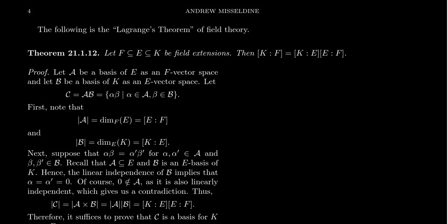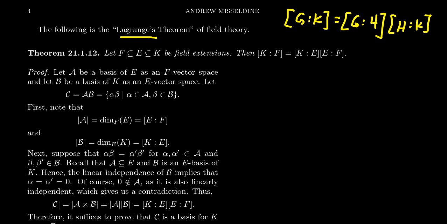In this video we're going to prove what one might call the analog of Lagrange's theorem for field theory. Lagrange's theorem tells us that every subgroup of a finite group divides the order of the group. From that you can infer a statement about indices: if the index of a subgroup measures the number of cosets, then you can factor indices. So if you have some subgroup K, the number of cosets of K inside G equals the number of cosets of H inside G times the number of cosets of K inside H, where K is a subgroup of H which is a subgroup of G.